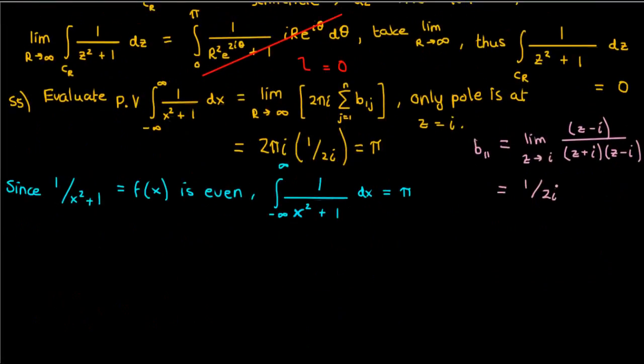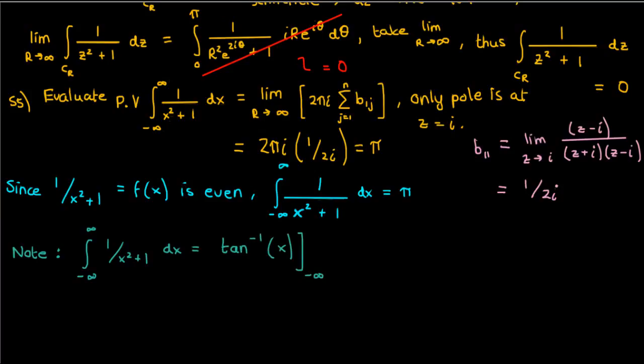We've successfully evaluated an improper integral using the residue theorem. Just one thing to note: you could evaluate this integral using trig substitution as well. The anti-derivative of the integrand is just arctan, so applying the limits gives π as the answer, which is consistent with what we found using the residue theorem — a nice verification.